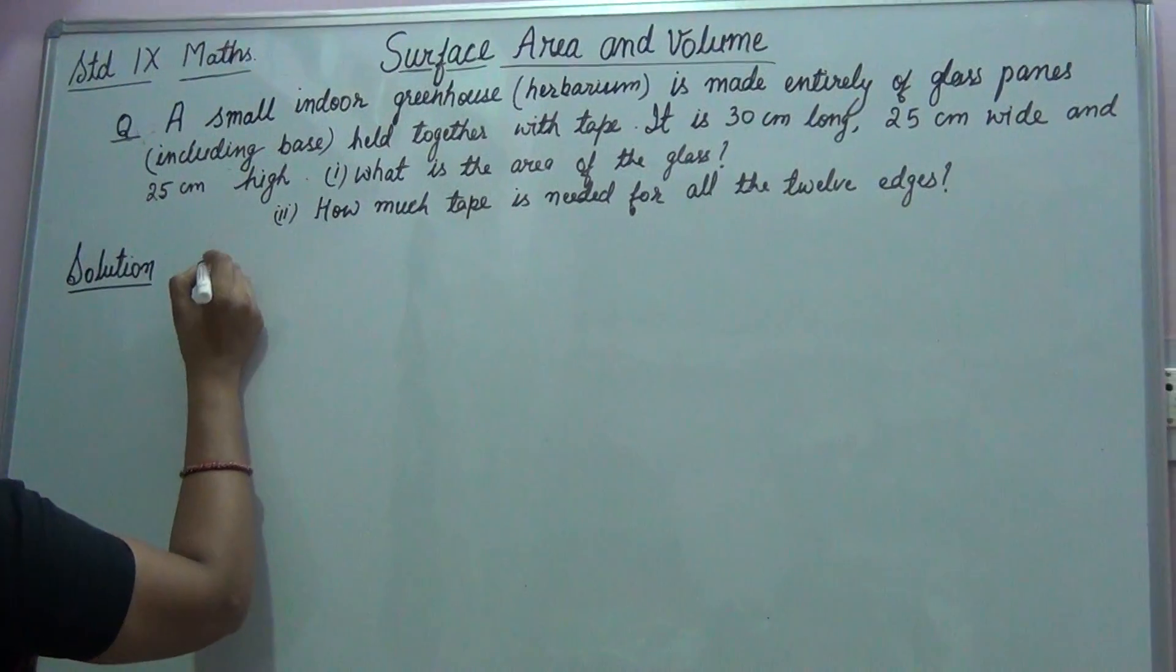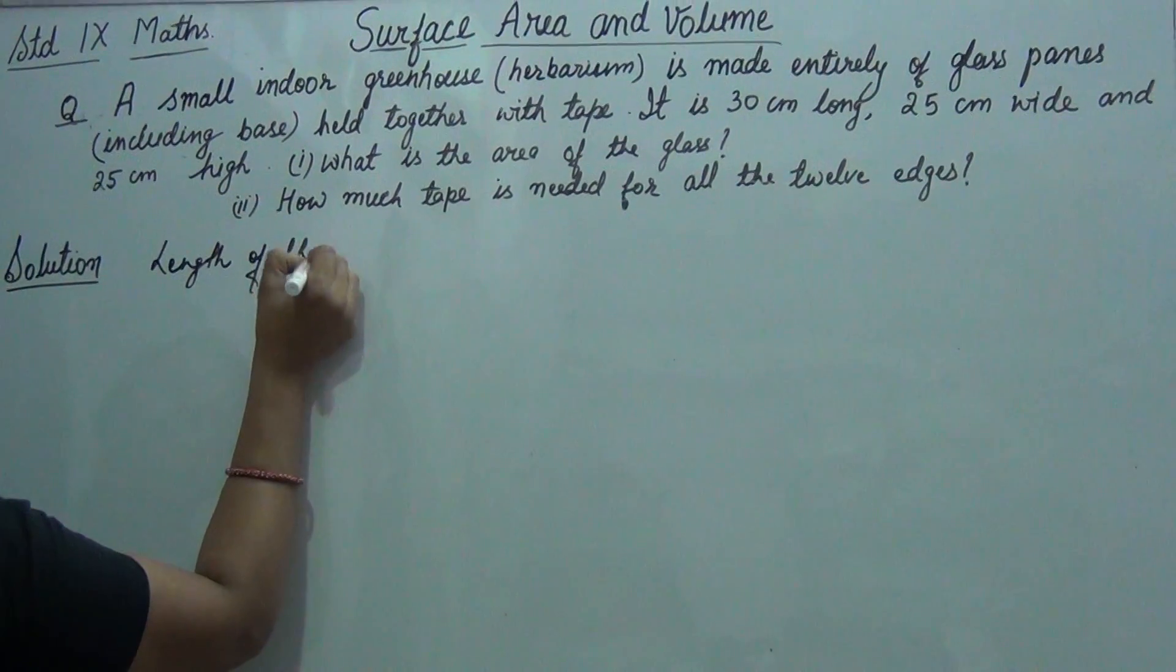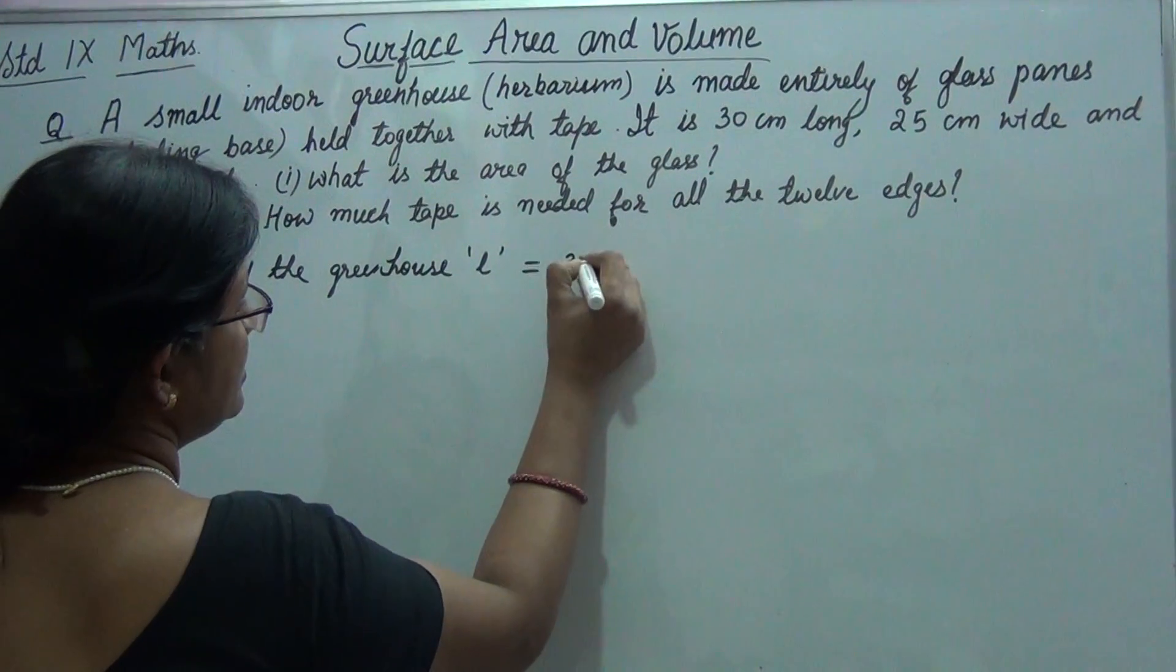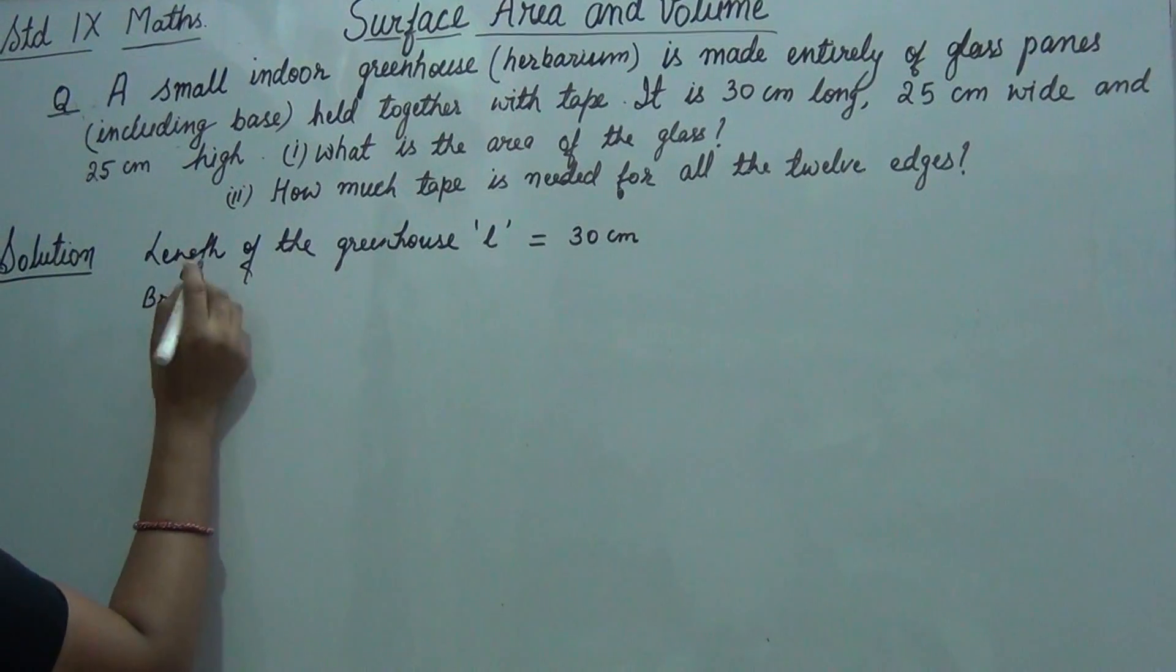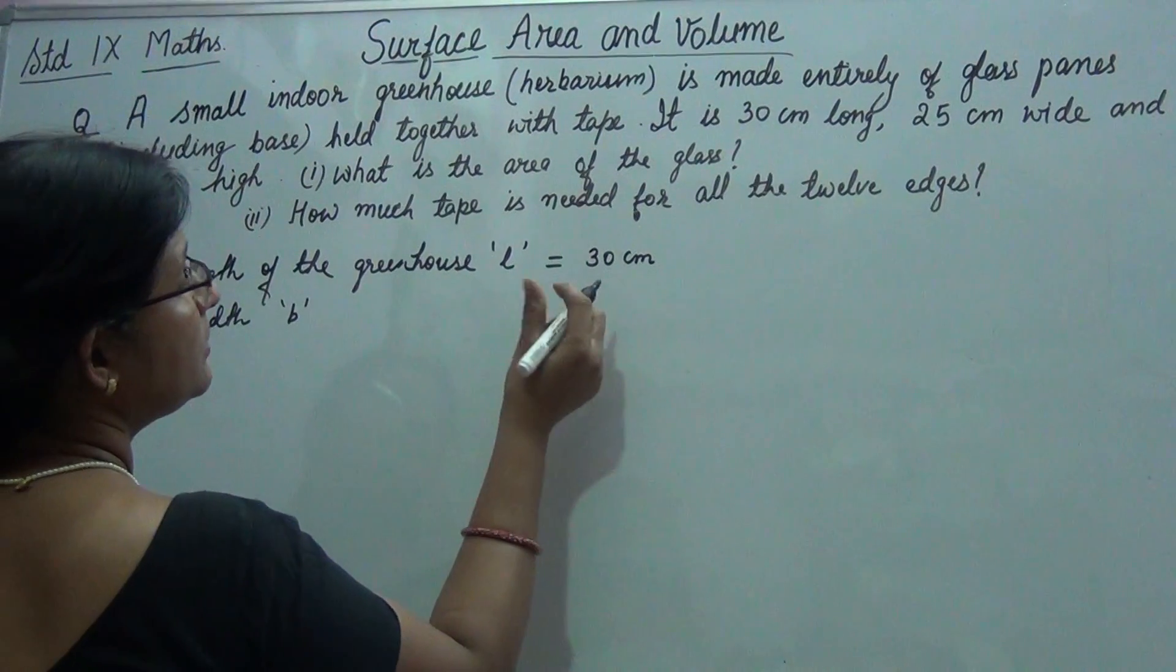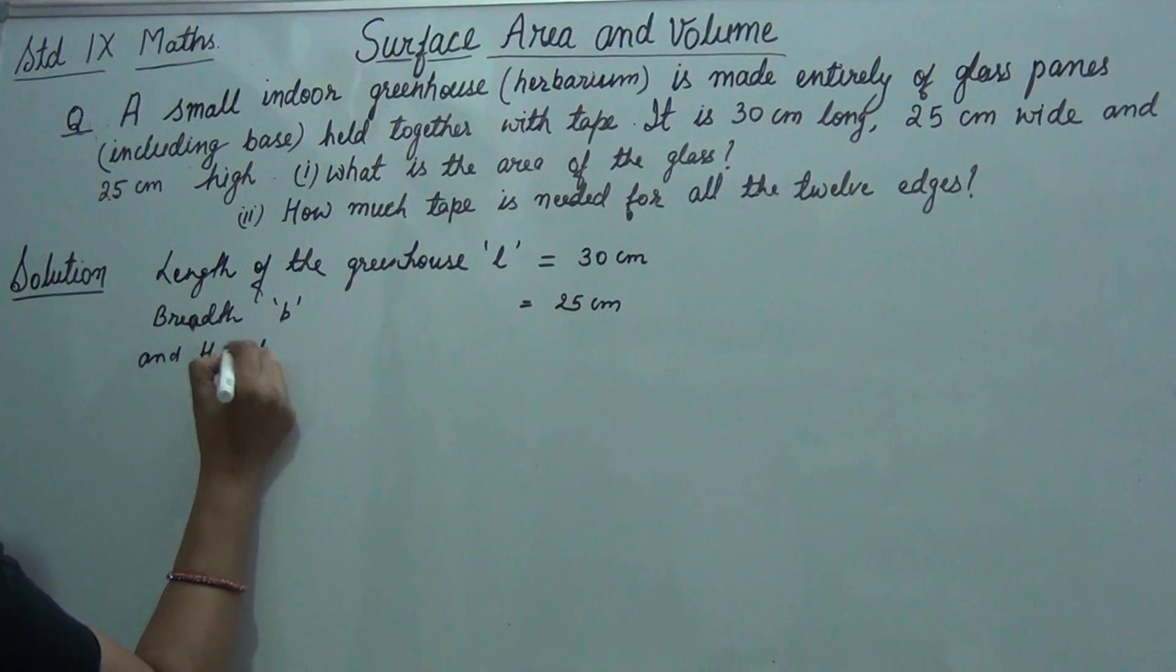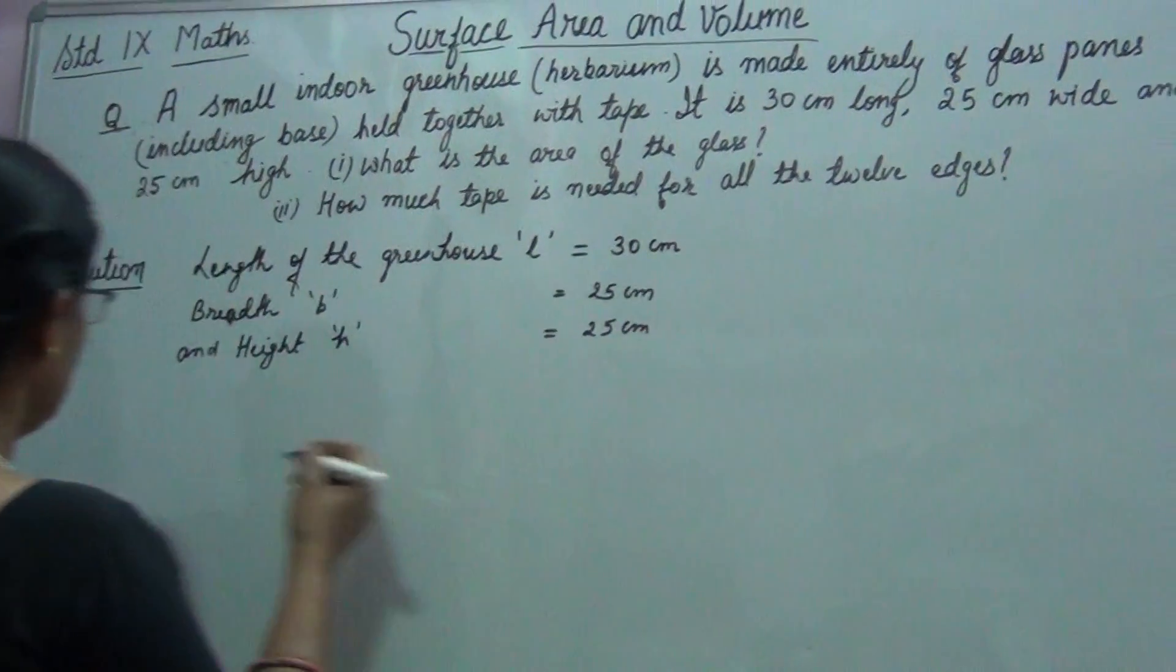Let us start the solution. Length of the greenhouse L is equal to 30 centimeter. Breadth B is equal to 25 centimeter and height H is equal to 25 centimeter.